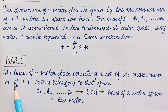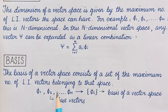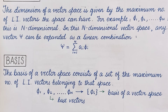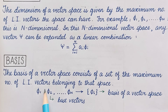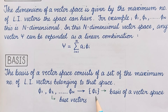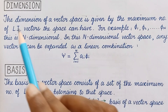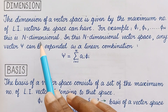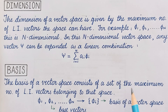Now, basis. The basis of a vector space consists of the set of the maximum number of linearly independent vectors belonging to that space — like φ1, φ2 till φn, represented by the set {φᵢ}. This set {φᵢ} is the basis of the vector space and the elements φ1, φ2 and so on are called base vectors. In dimension we count the maximum number of vectors, while in basis we refer to the maximum number as a set.